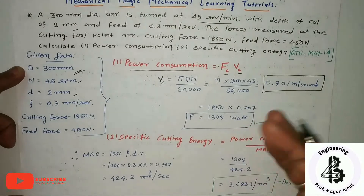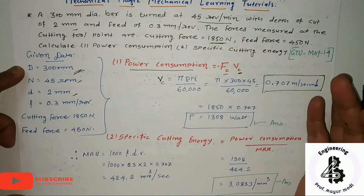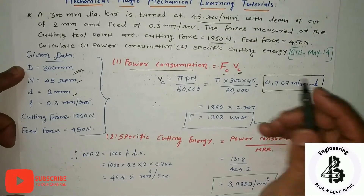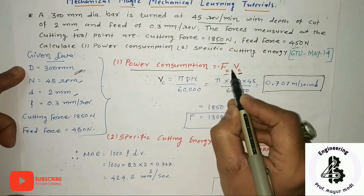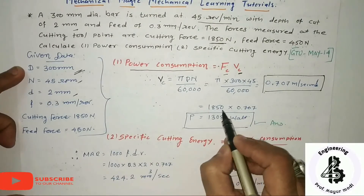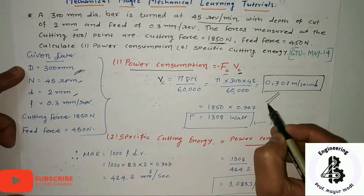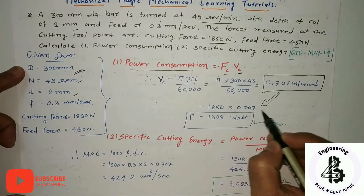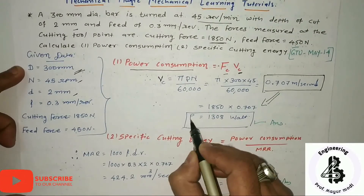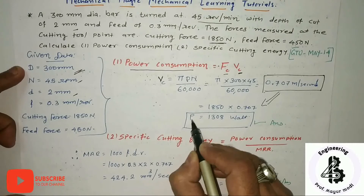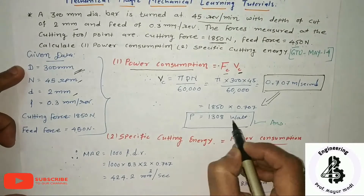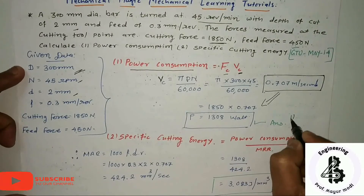Now, power consumption P equals cutting force multiplied by cutting velocity, which is 1850 × 0.707. The power consumption P comes out to 1308 Watts. That is the answer to part one.